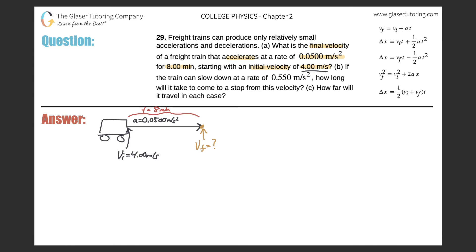Before I think about formulas, I want to look at my units. I notice one problem: I have seconds in the velocity and acceleration, but minutes in time — that's inconsistent. I suggest converting the 8 minutes into seconds. So we're going to do 8 minutes: minutes go on the bottom, 60 seconds on top. 60 seconds in one minute. Minutes will cancel.